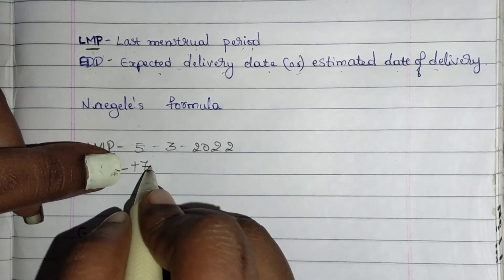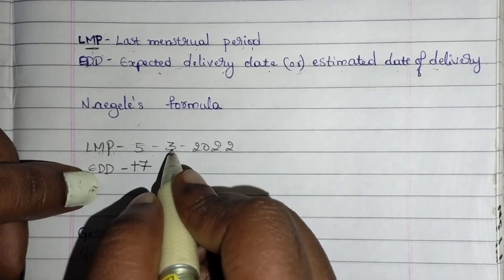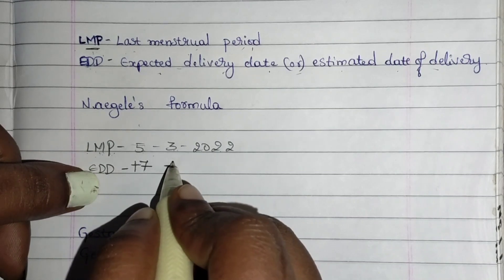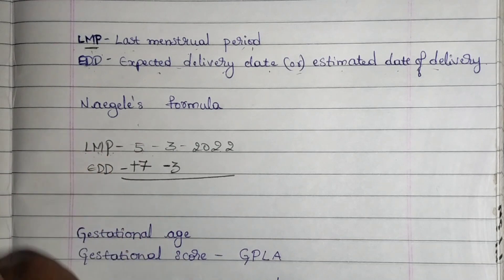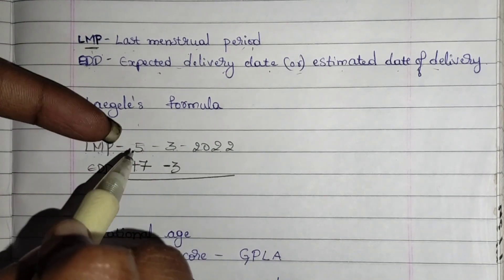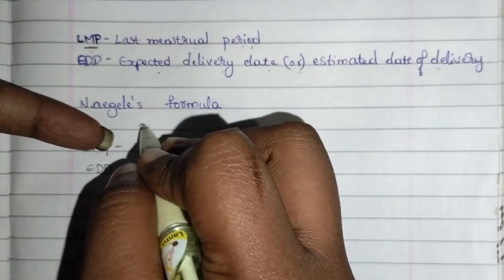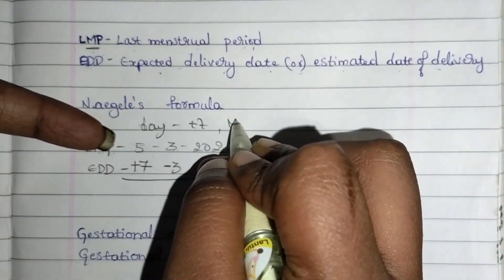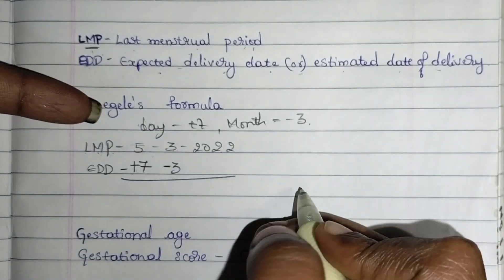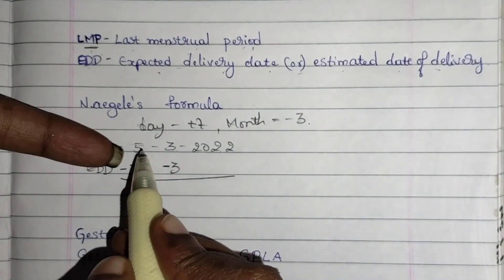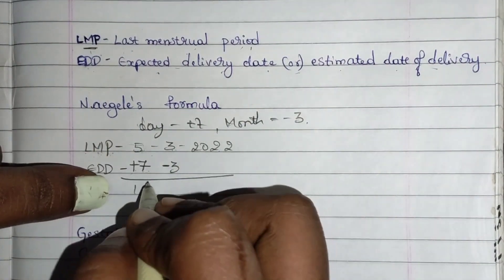In the first formula, for the day we need to add 7, and for the month we need to subtract 3. So for our example: the day is 5, we add 7 — that gives us 12. That is the first formula: add 7 to the day, subtract 3 from the month.